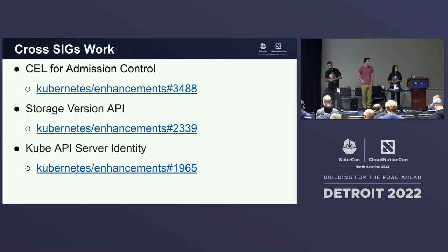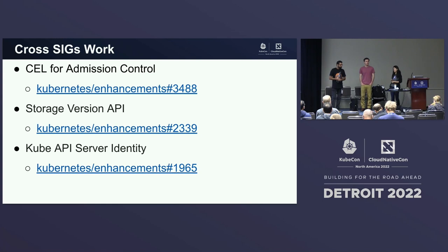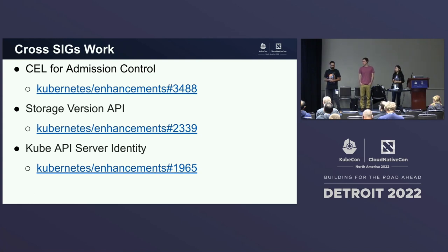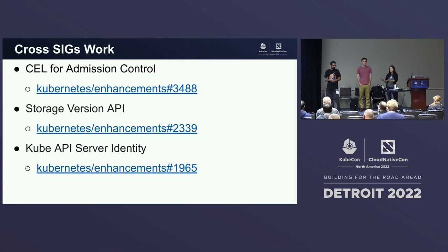We also want to talk about cross-SIG work. The CEL for admission control KEP recently merged for 1.26, touching policies for admission, validation, mutation, and authorization — a lot of overlap between our two SIGs. We also have the storage version API KEP and the API server identity KEP, both crucial to ensure HA on the API server, which is the foundation needed to rotate KMS keys and is part of the KMS V2 feature as well.